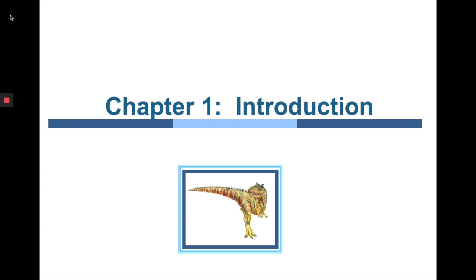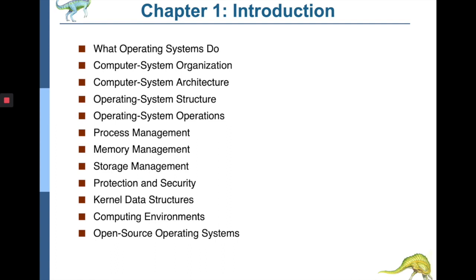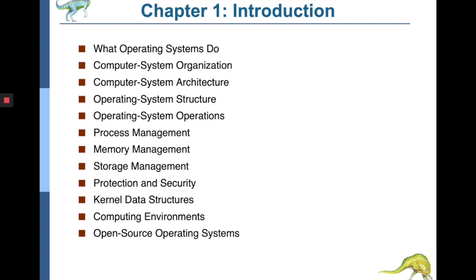We will be talking one by one on each of these and try to uncover where and how the operating system is working. The agenda for today's discussion is to give an overview of what exactly the operating system is doing. Coming back to the definition, the operating system is an interface between computer hardware and the end user. Its goal is to provide an interface where users can start their applications and it provides a seamless environment for running those applications efficiently.